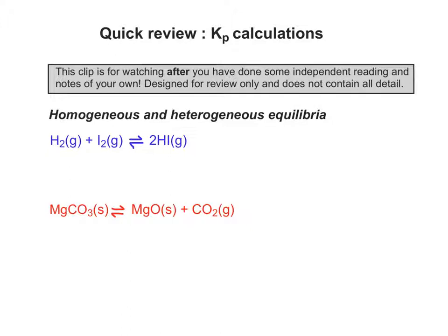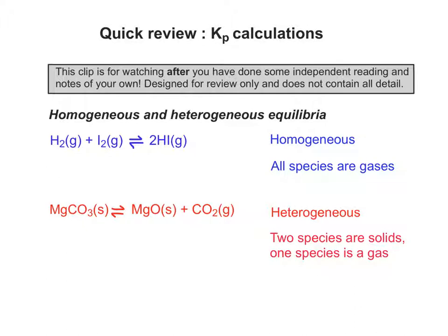So if we now have a look at two equilibria, one is homogeneous and one is heterogeneous, it should be quite easy to tell which is which. So how would we write the KP expression for each of these?